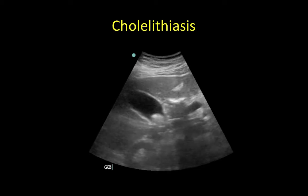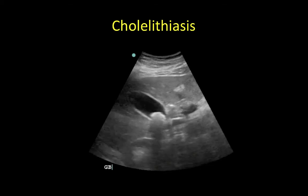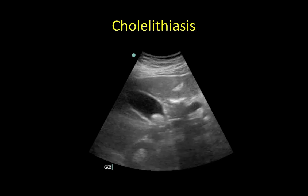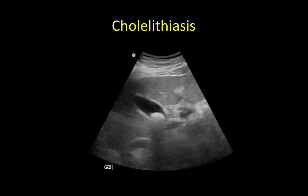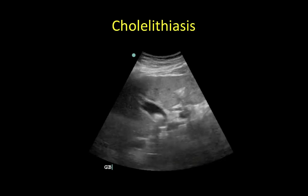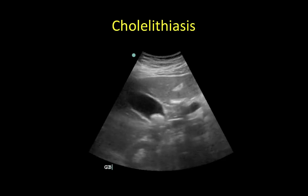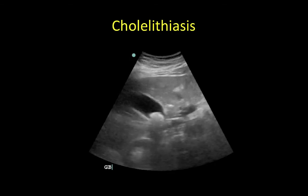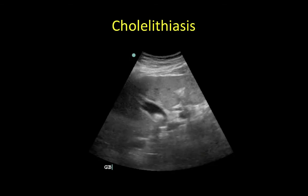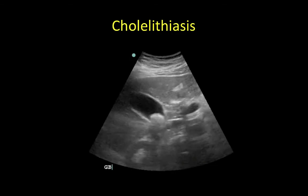This example shows a large stone with shadowing in the neck of the gallbladder. Note that with larger stones, only the echogenic near-field portion of the gallstone is seen because the echoes are unable to penetrate the stone, similar to the appearance of the vertebral body when abdominal scanning.